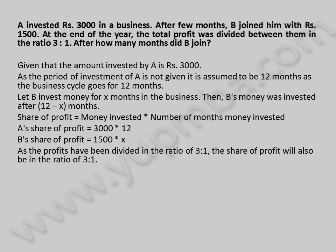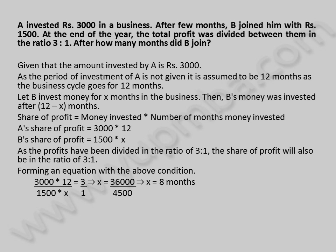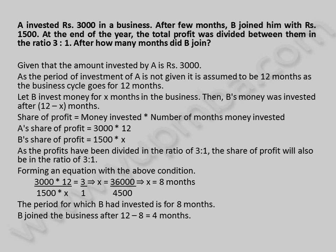As the profits have been divided in the ratio of 3 is to 1, the share of profit will also be in the ratio of 3 is to 1. Forming an equation with the above condition: 3,000 into 12 divided by 1,500 into X is equal to 3 by 1. This implies X is equal to 36,000 by 4,500, which implies X is equal to 8 months. The period for which B had invested is 8 months. B joined the business after 12 minus 8 is equal to 4 months.